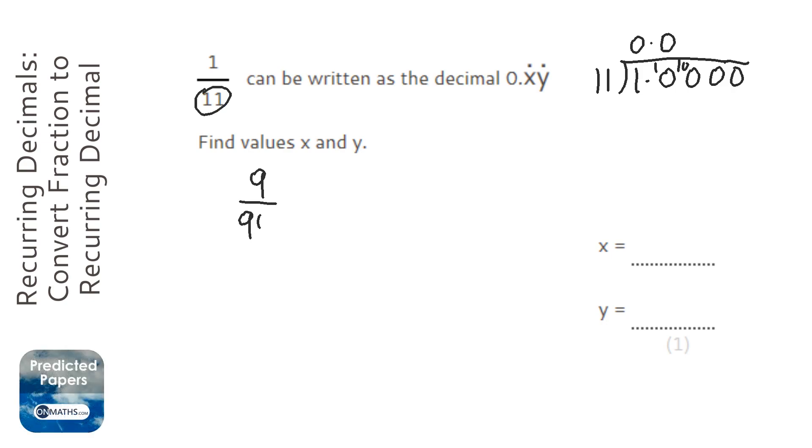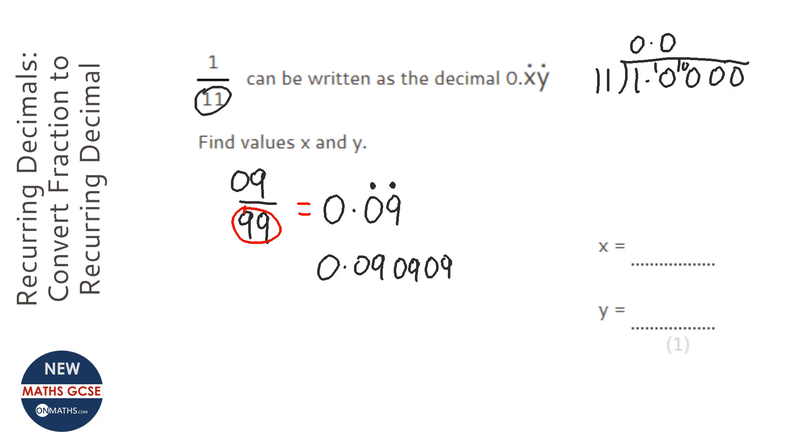Any time you have 99 at the bottom of a fraction, there will be two repeating digits from the top. Now technically that's 0, 9, we just don't show the 0, so it's 0.09 recurring. If you were to write that out as a sequence it would look like this, and it would just go on forever.